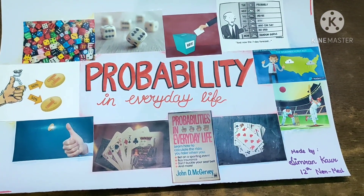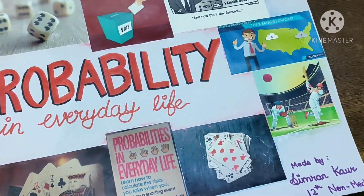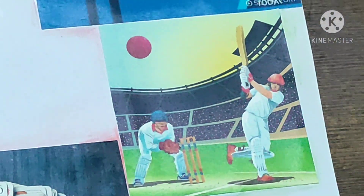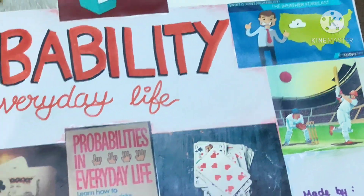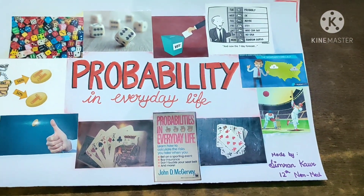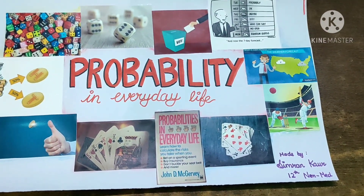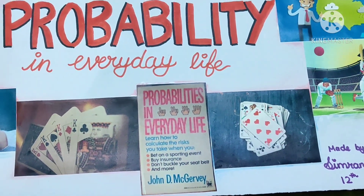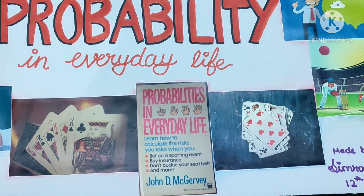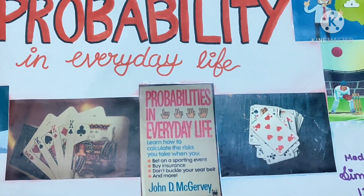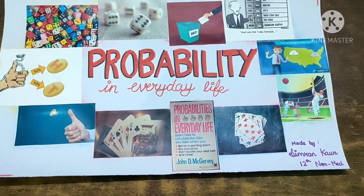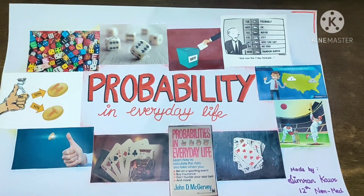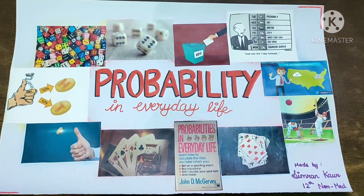And then is cricket. All the cricket fans estimate the chances of a team to win based on their past and present performances — it's all estimation. The last is cards. We use estimation or probability while playing cards as well, and when a card is lost, we can kind of estimate the probability of the lost card. So these were a few examples of probability in our everyday life. Thank you so much and have a nice day.